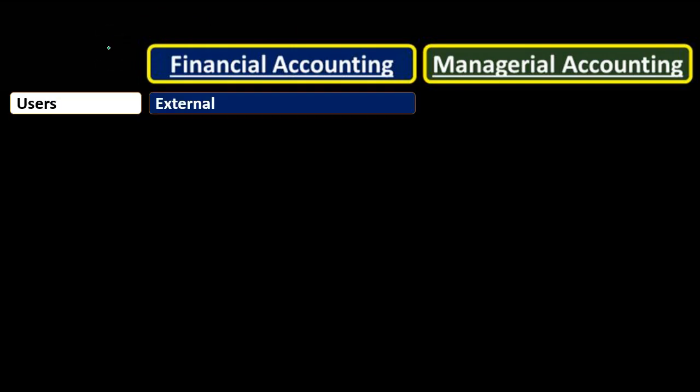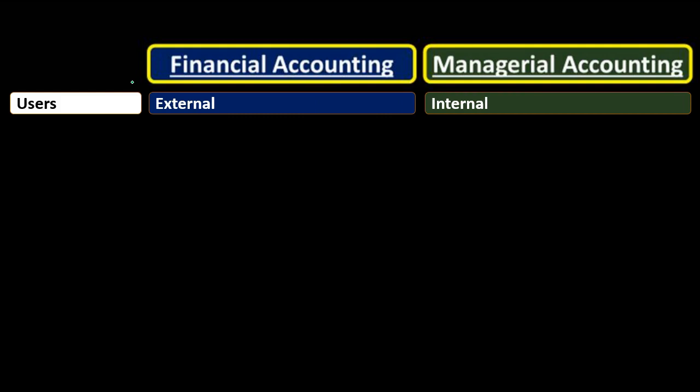Let's think about the differences by contrasting financial accounting versus managerial accounting. Who are the users? The users for financial accounting are going to be external; for managerial accounting, they're going to be internal. The financial accounting information is designed and regulated so that external users — investors and creditors — can trust it and know exactly what to expect. In managerial accounting, we're talking about internal users, so management can print their internal reports more freely, however they want, to make the best decisions.